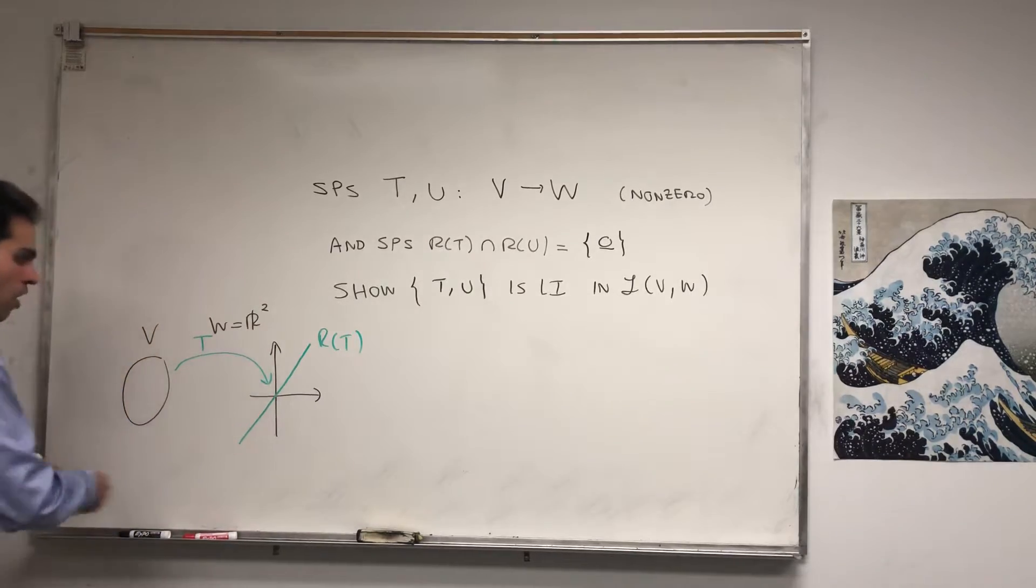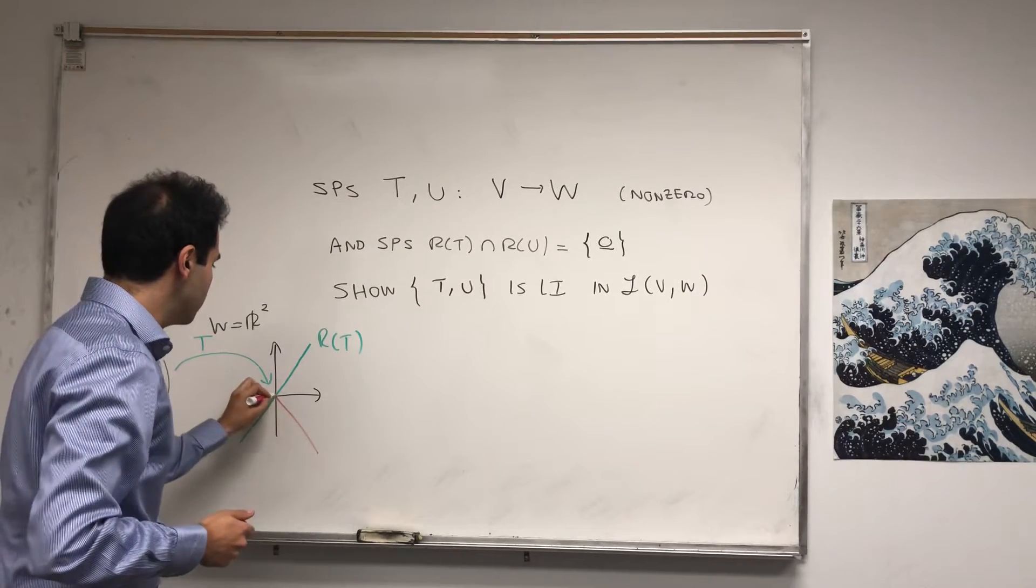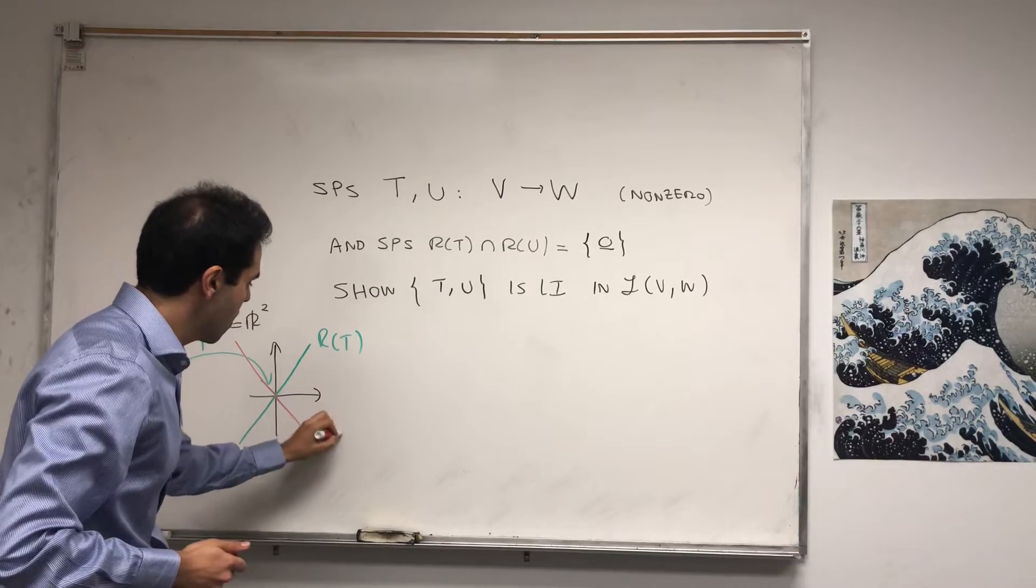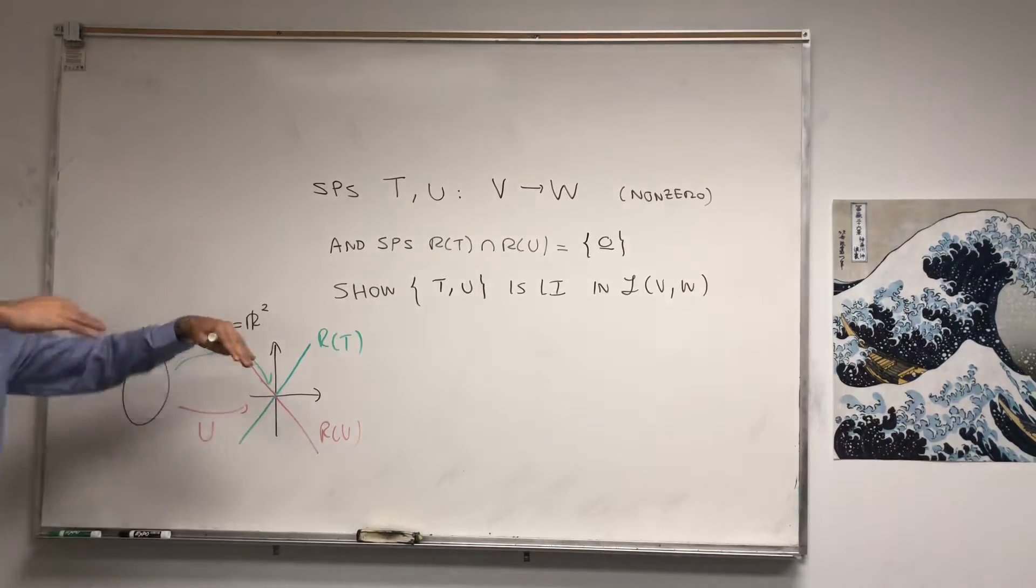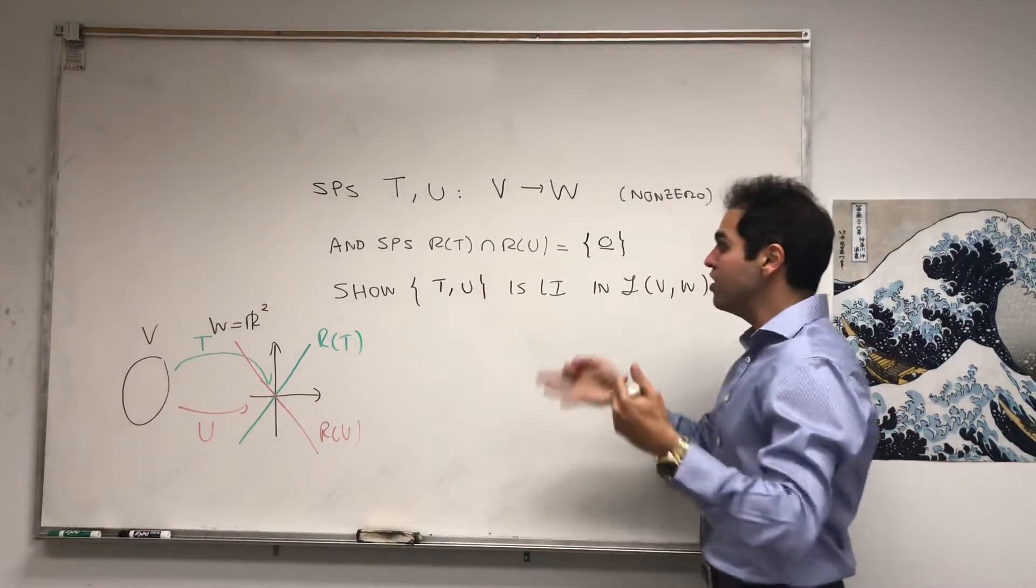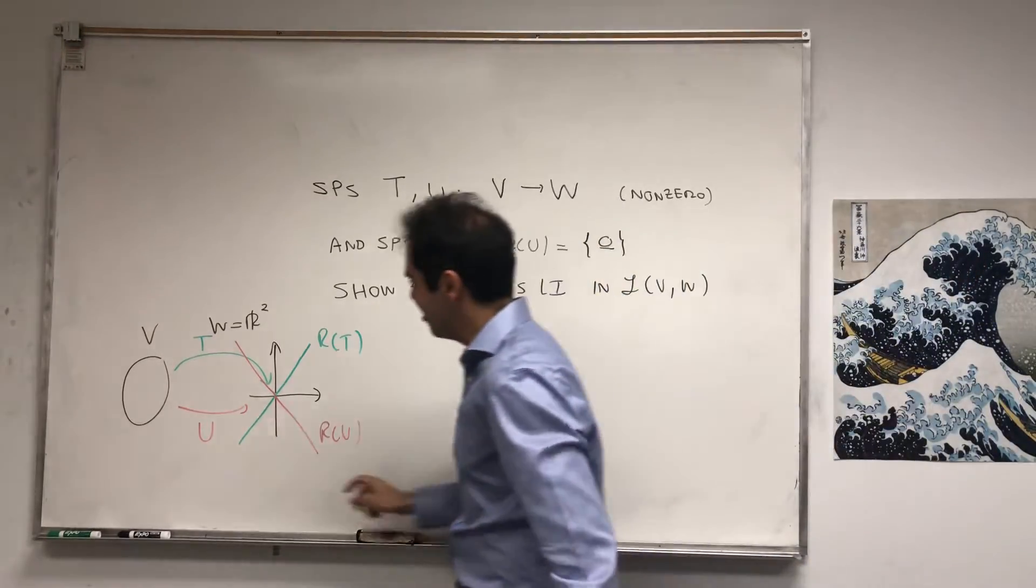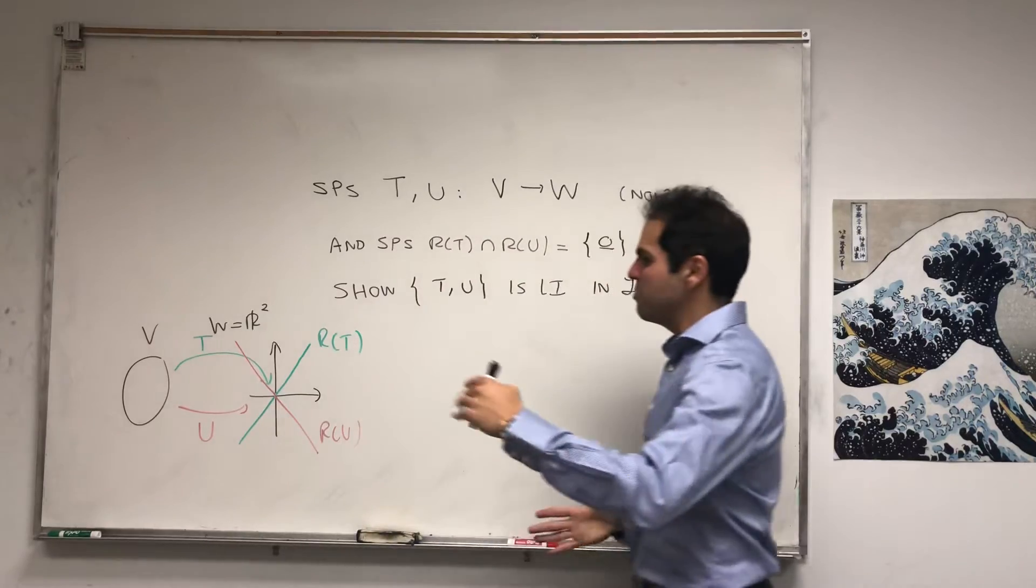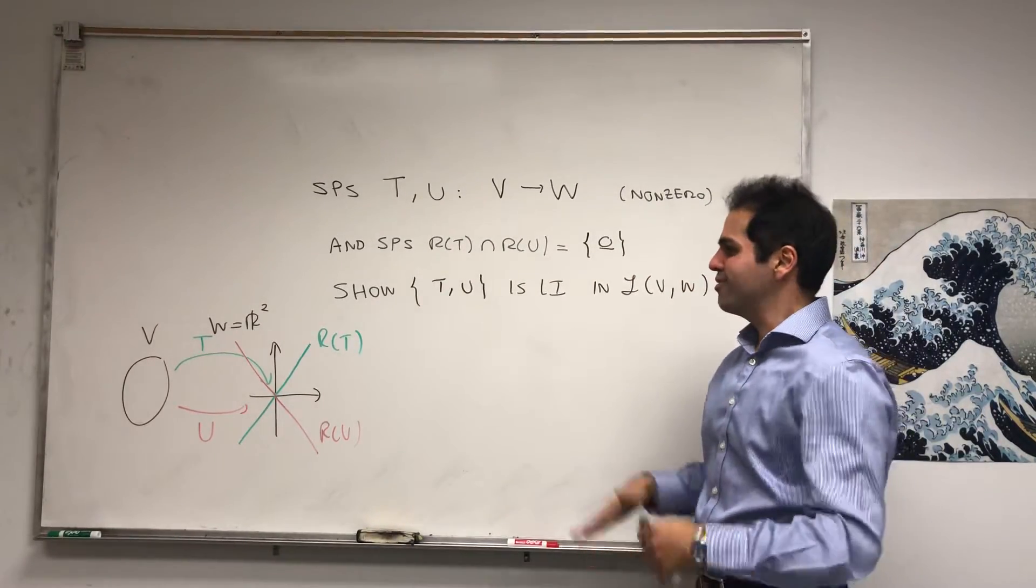And U maps all of V to, let's say, the line y equals minus x. If somehow their ranges don't cross, if the ranges don't cross, then it turns out T and U are linearly independent. It's very neat. It's almost like if you have two cars that don't really cross, then there's no accident, in some sense.